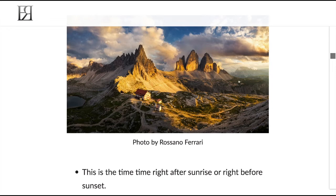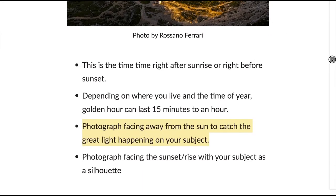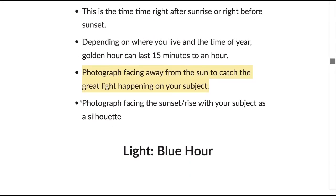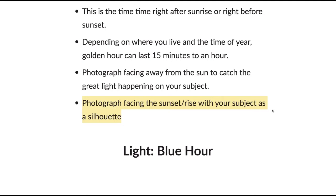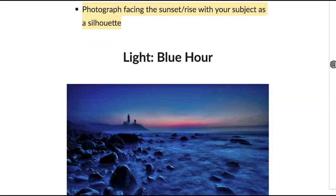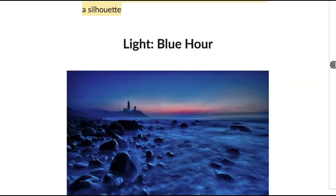In this example they're not photographing at the sunset — the sun is setting over there, but they're photographing away from it to catch the light hitting the mountains. You can also photograph facing the sunset or sunrise, which will create silhouettes, especially with people. If someone is standing and blocking the sun it creates a silhouette, which is very popular in both landscape and portrait photography.